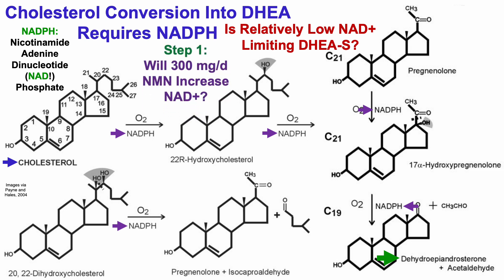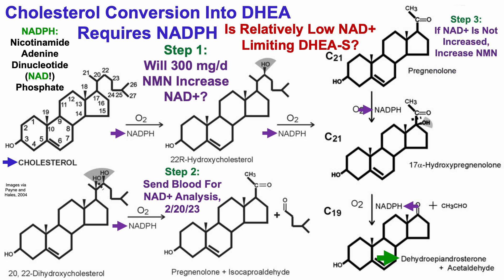To test that, step one is whether 300 milligrams per day of NMN — which I've been taking for about two weeks — will increase NAD. Yes, I did start supplementing with NMN. I favor targeted supplementation with a demonstrated need, and in this case there may be a demonstrated need. Step two: I'll send blood for NAD analysis about a week from now. Step three, if needed: increase NMN intake to around 600 milligrams per day or higher.